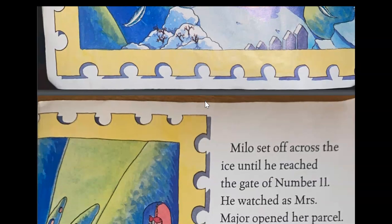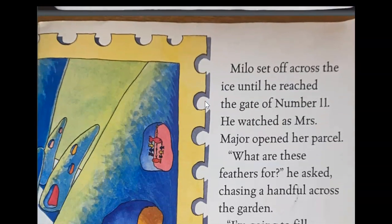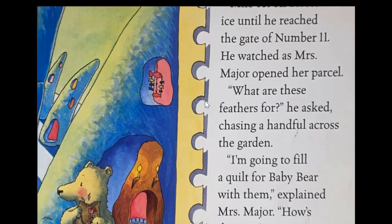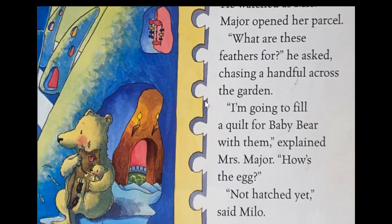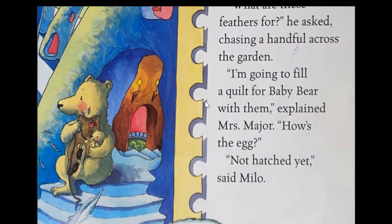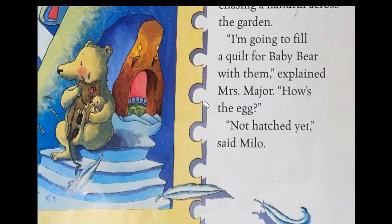Milo set off across the ice until he reached the gate of number 11. He watched as Mrs. Major opened her parcel. What are those feathers for, he asked, chasing a handful across the garden. I'm going to fill a quilt for baby bear with them, explained Mrs. Major. How's the egg? Not hatched yet, said Milo. There she is with her parcel.